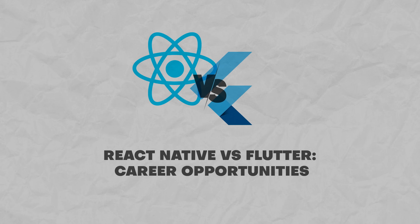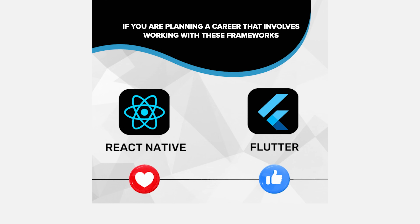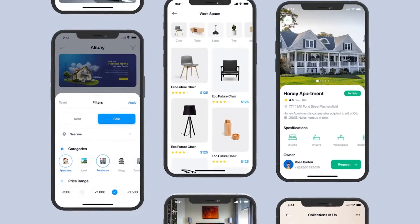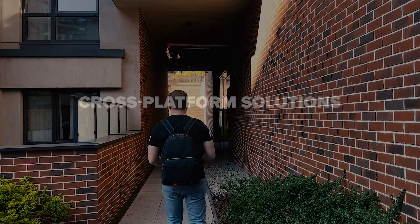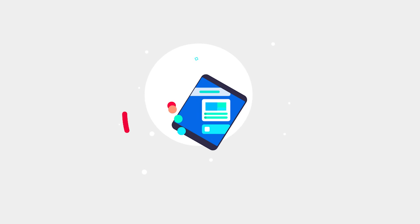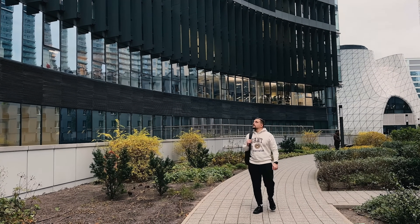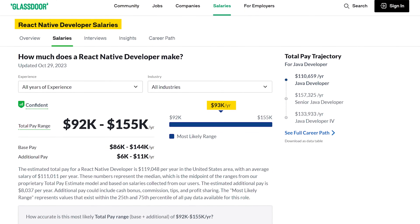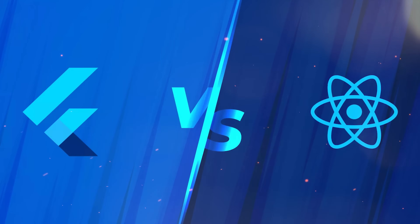React Native vs Flutter — career opportunities. If you are planning a career working with these frameworks, you have nothing to worry about. In recent years the demand for mobile app developers has been steadily growing and it looks like it's now reaching an all-time high. Mobile developers are turning to cross-platform solutions for speedy and efficient development. Major companies like Meta, Pinterest, Alibaba, and more have successfully embraced cross-platform development. Currently, the average salary for React Native developers in the United States is $93,000 per year, while Flutter developers make as much as $89,000 on average. The difference is minimal, and in both cases salaries are more than attractive.